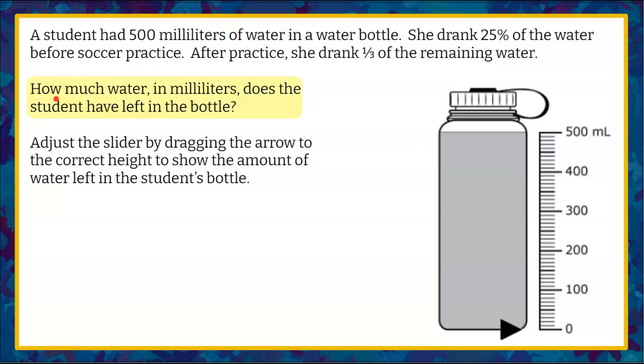Once again, reviewing, we want to know how much water in milliliters does the student have left in the bottle. So when we start this problem, the student has 500 milliliters of water. You can see I filled it with that blue coloring. So the water bottle is filled to this line, 500 milliliters.